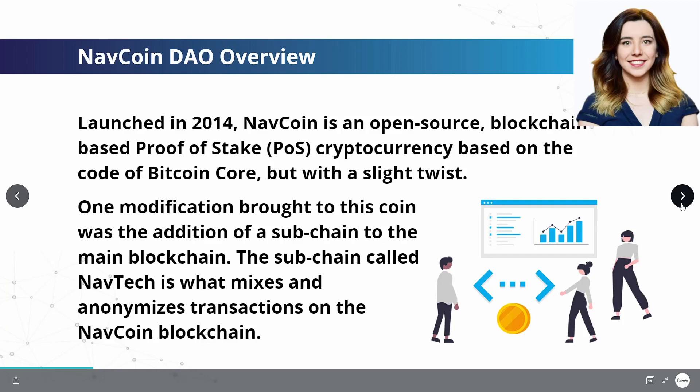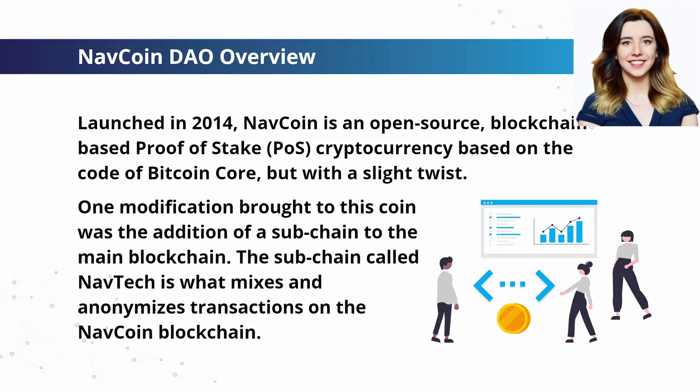For the overview, Navcoin is launched in 2014, and it is an open-source blockchain-based proof-of-stake cryptocurrency based on the code of Bitcoin Core, but with a slight twist. One modification brought to this coin was the addition of a subchain to the main blockchain. The subchain called Navtech is what mixes and anonymizes transactions on the Navcoin blockchain.